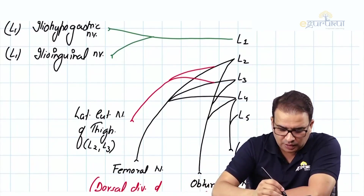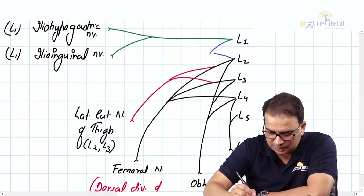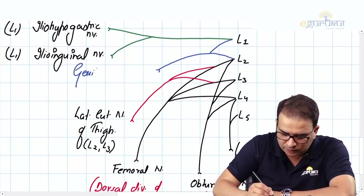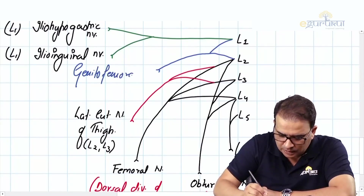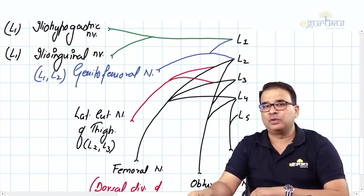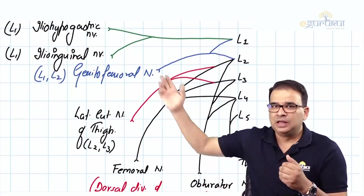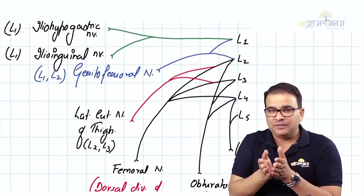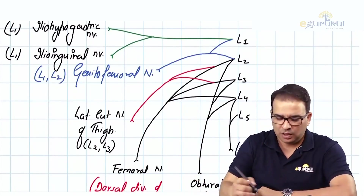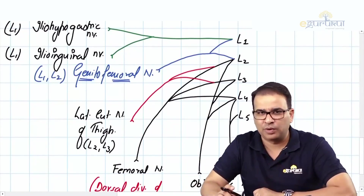Another very important nerve, clinically, is the genitofemoral nerve, coming from L1 and L2. The name itself tells you what it does — it divides into two branches: the genital branch and the femoral branch of the genitofemoral nerve. We will discuss this in more detail shortly.